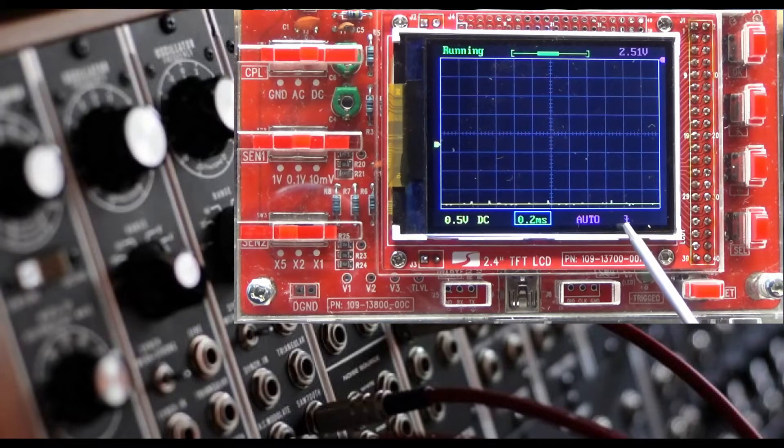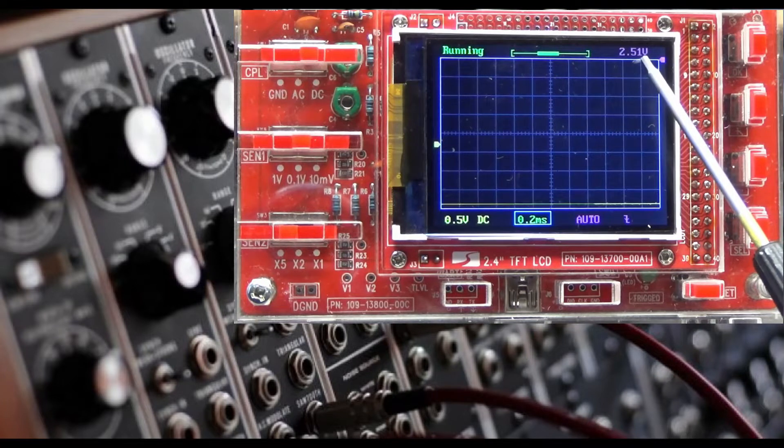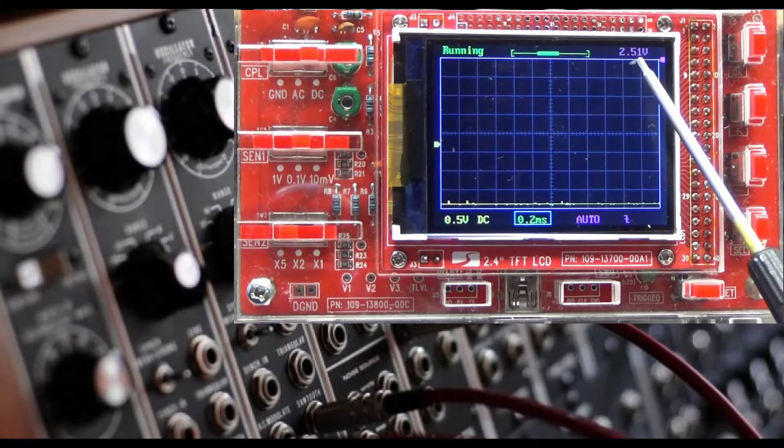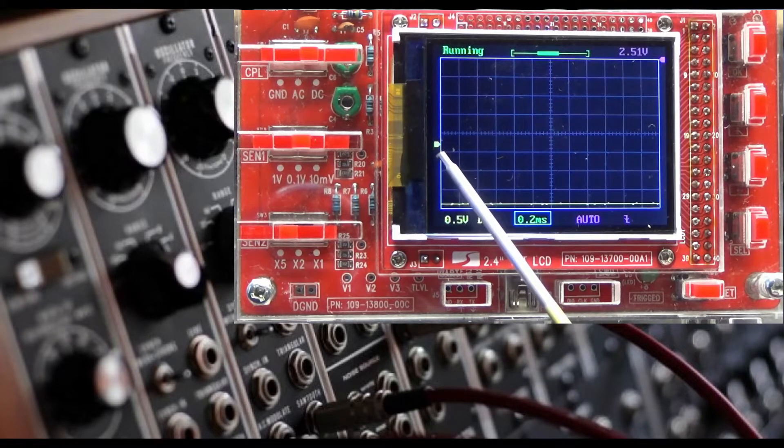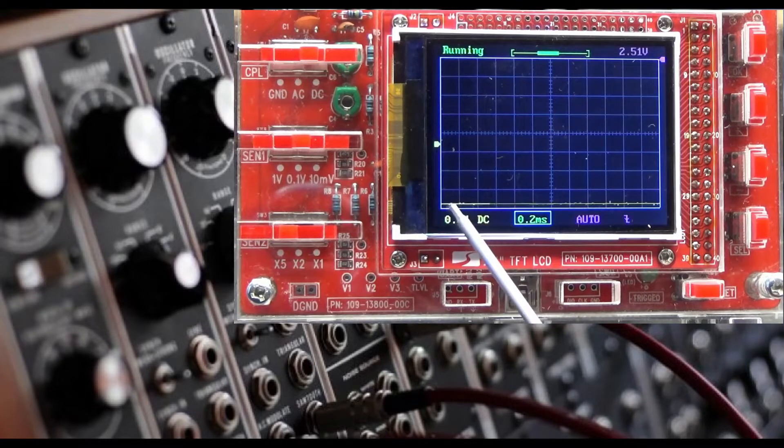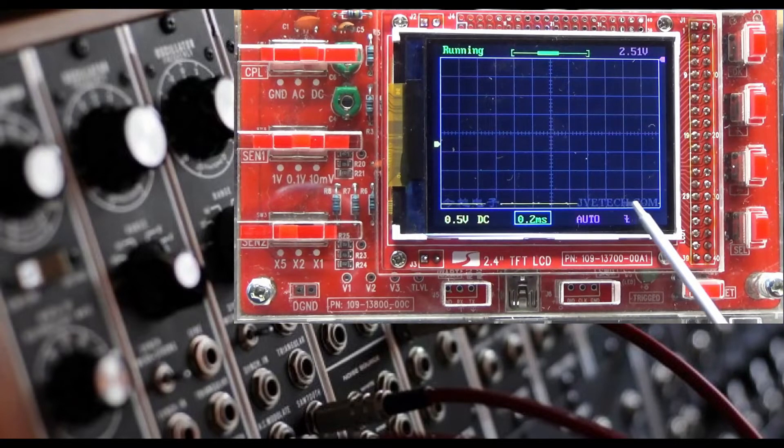Currently it looks like it's set to a falling edge trigger. It could be either falling edge or rising edge. It should not matter. Right now I have it set to 2.5 volts triggering voltage but again it should not matter. I have my little yellow arrow set right about in the middle of the screen over here. This yellow line here is indicating ground.